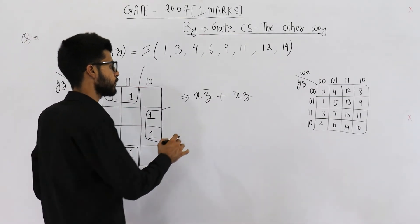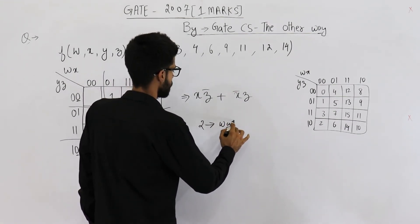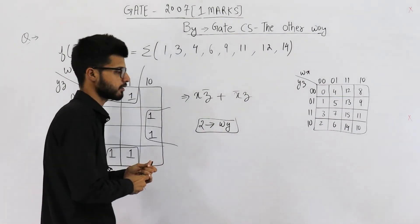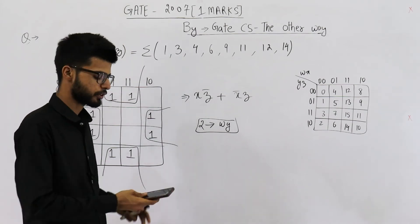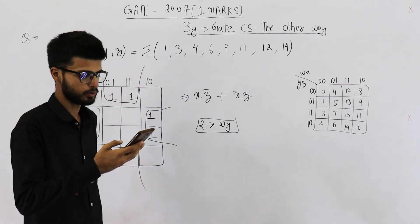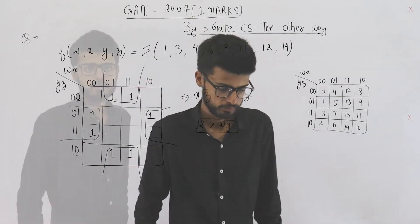It is independent from two variables and they are W and Y. So the answer is this function is independent of two variables, which is option number two or option B, independent of two variables.